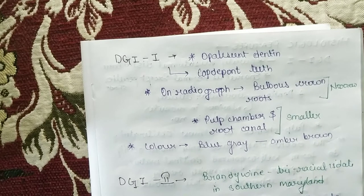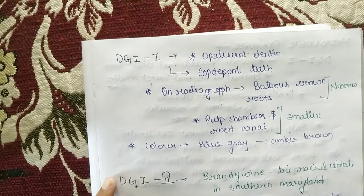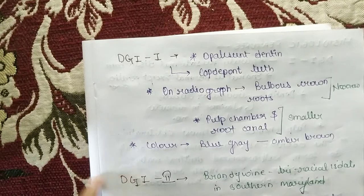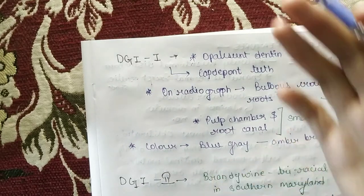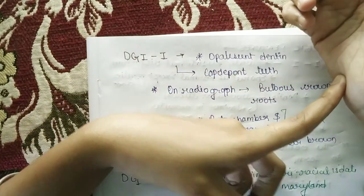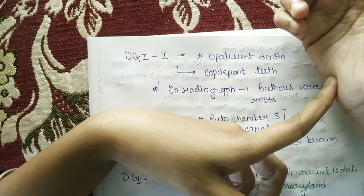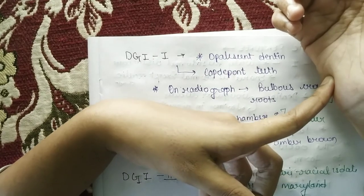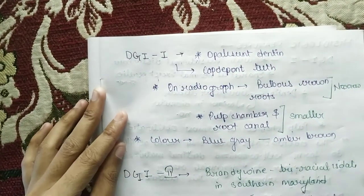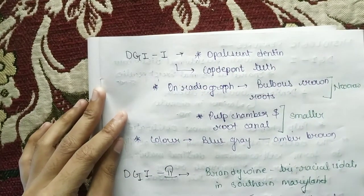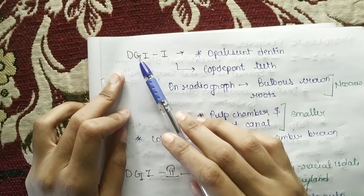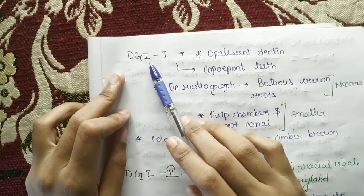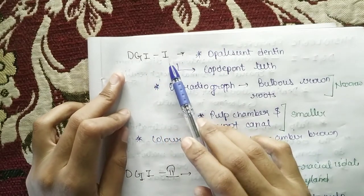Hello everyone, welcome to the channel — study, art, motivation and education. In this video we are going to discuss the clinical features of dentinogenesis imperfecta. Last class we studied the classification and introduction, so in this lecture we are going to study clinical features. First of all, we will study dentinogenesis imperfecta type 1.